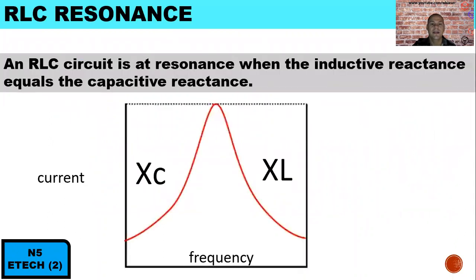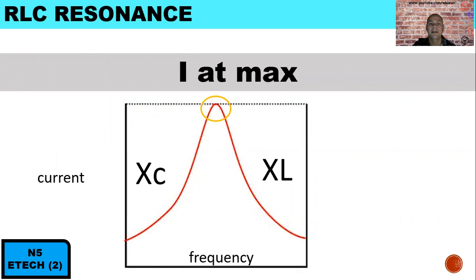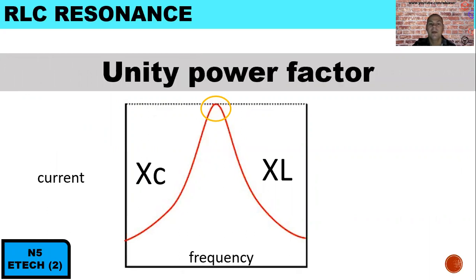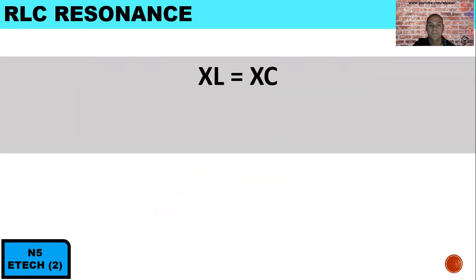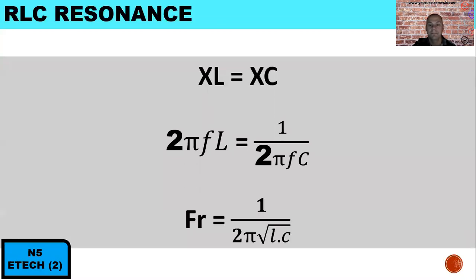An RLC circuit at resonance is when the inductive reactance equals the capacitive reactance: XL equals Xc. At resonance, impedance is at minimum, current is at maximum, and we have unity power factor, meaning cos theta equals 1. The formula for resonant frequency is: 2πfL equals 1 over 2πfC, so the resonant frequency equals 1 over 2π times the square root of LC.